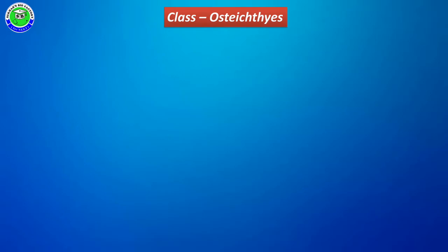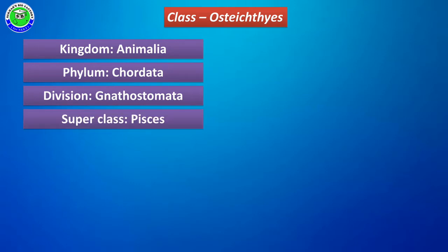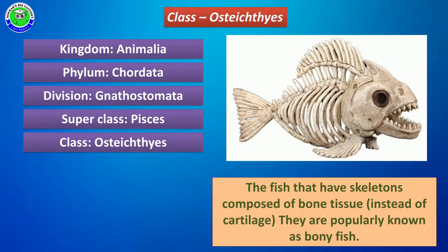It belongs to phylum Chordata. The systematic position of class Osteichthyes: it belongs to kingdom Animalia, phylum Chordata, division Gnathostomata, and belongs to superclass Pisces. The name of the class is called Osteichthyes.